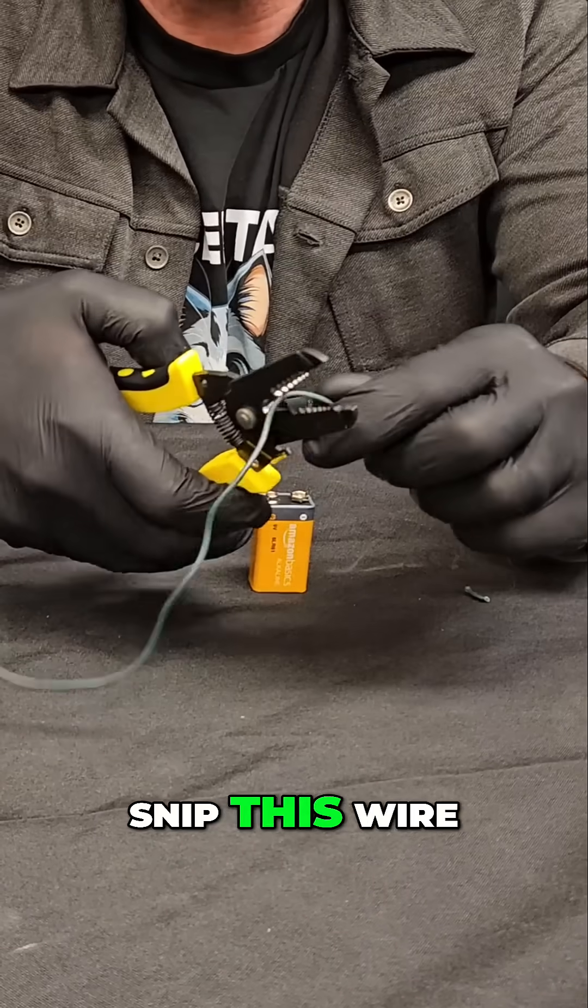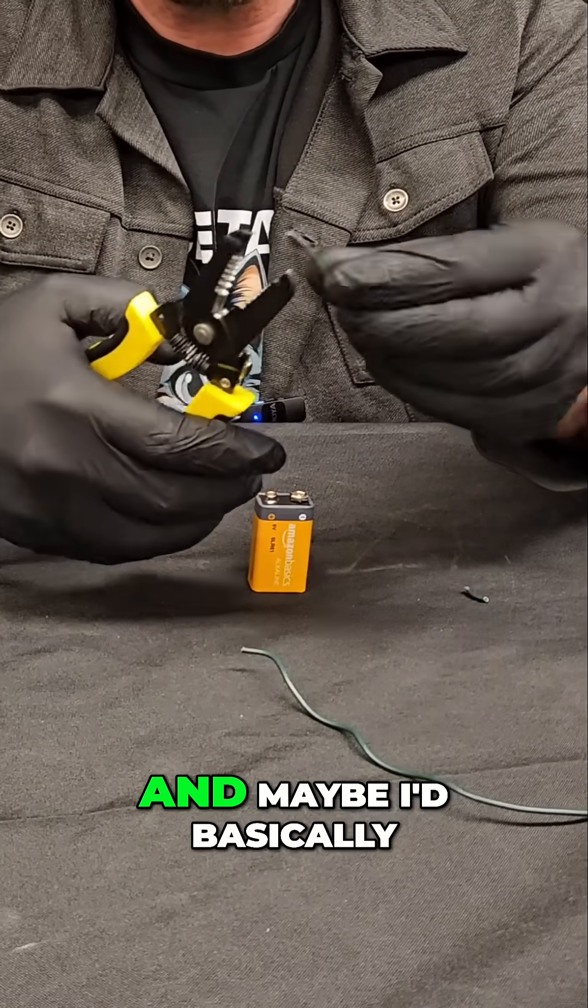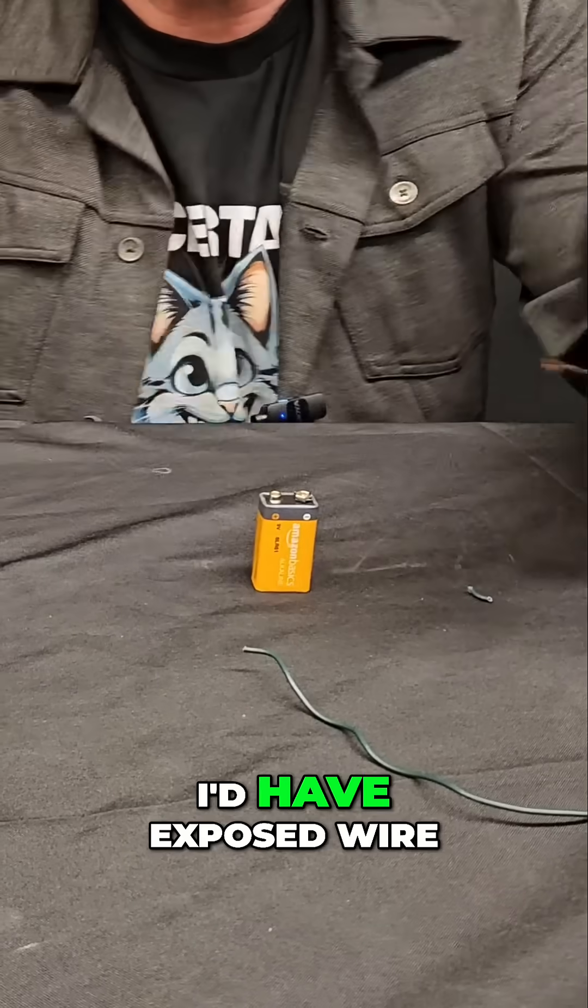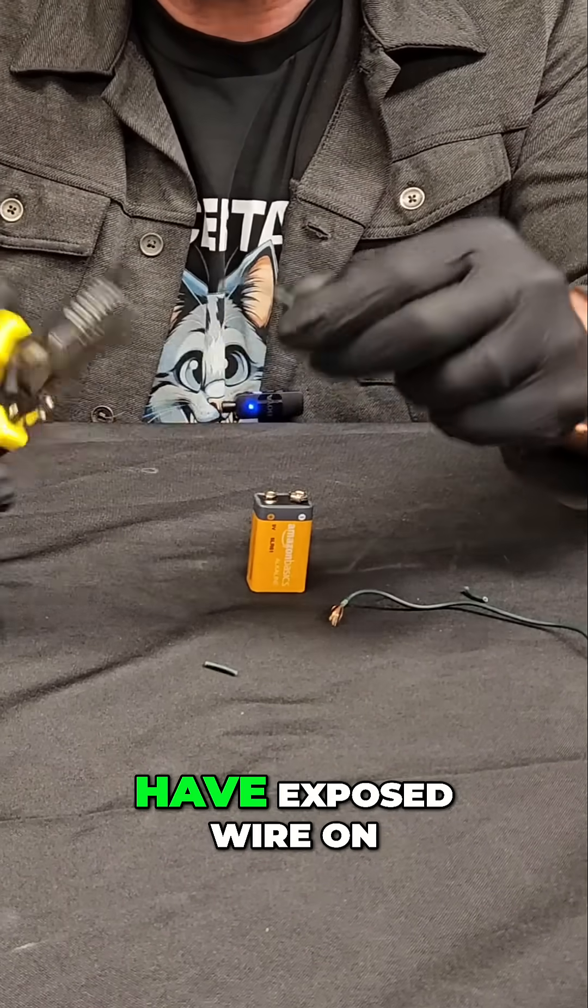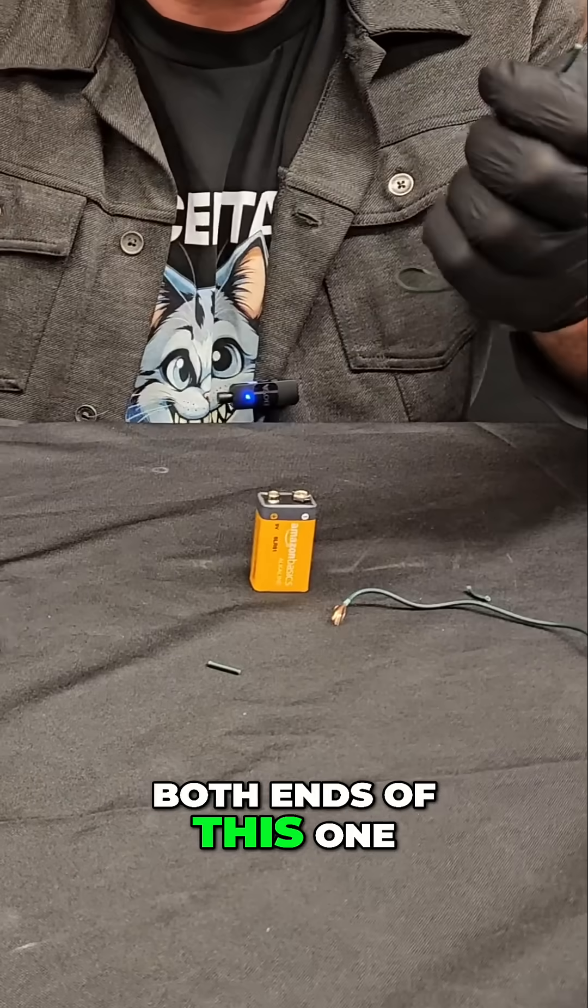What I want to do is snip this wire. I'd have exposed wire on both ends here, and then exposed wire on both ends of this one.